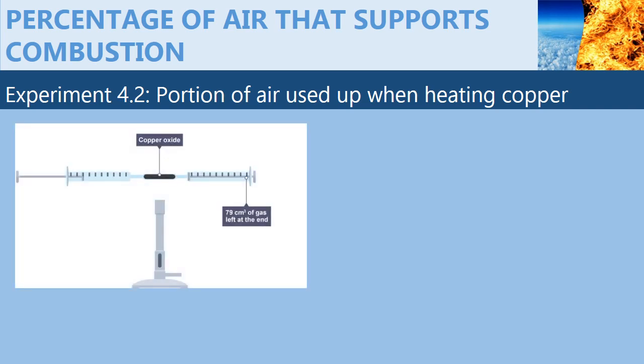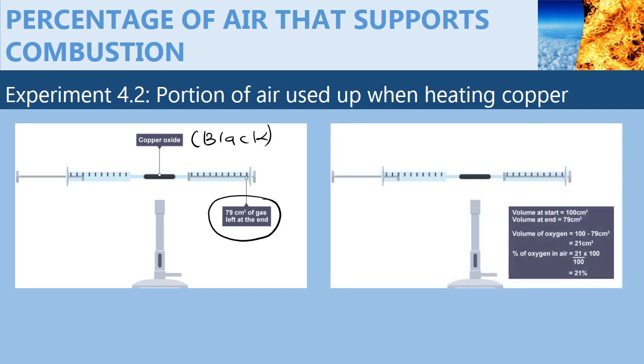At the end of the experiment, all the copper reacts with the active part of air, which now we know is oxygen, to form black copper oxide. An observation at the syringes, which were initially at 100 cubic centimeters of gas, now read 79 cubic centimeters of gas. So we can calculate the percentage of oxygen in air.